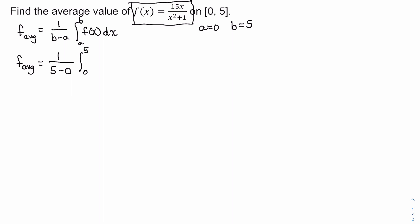We want to find an antiderivative of 15x / (x² + 1), then use it to evaluate the definite integral by plugging in the upper limit minus the lower limit. Looking at the integrand, the denominator has two terms, so I need to use a u-substitution. Let's rewrite this first before identifying the substitution.